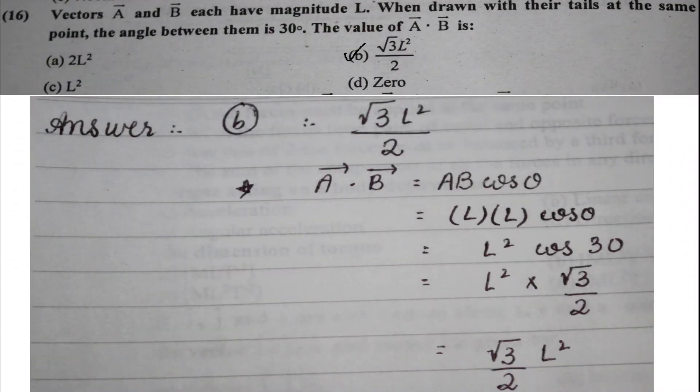Next question: vectors a and b each have magnitude l, and the angle between them is 30 degrees. The value of a·b is calculated using the dot product formula a·b·cos θ. Since both magnitudes are l, this becomes l²·cos 30°, giving a final answer of (√3/2)·l², which is option B.